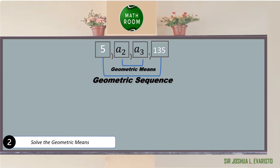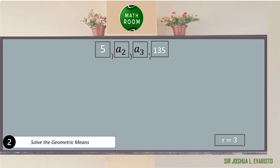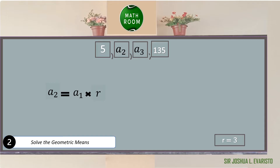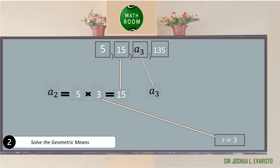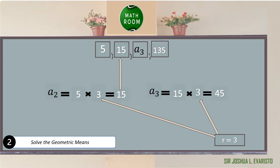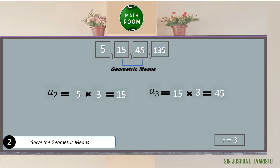Since we know the common ratio is 3, we multiply 3 to each term to get the next. To find a2: a2 equals a1 times r, which is 5 times 3 equals 15. To find a3: a3 equals a2 times r, which is 15 times 3 equals 45. Therefore, the geometric means are 15 and 45 — the first geometric mean is 15 and the second is 45.